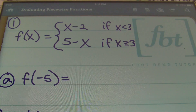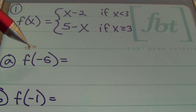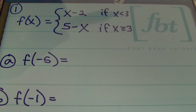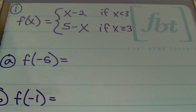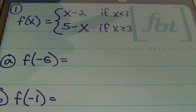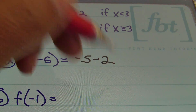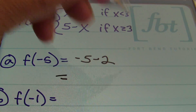When evaluating piecewise functions, you're going to be concerned about the conditions first. For f of negative five, it's asking what is the y value when x is negative five. Negative five is definitely less than three, so we use x minus two. Replacing x with negative five gives negative five minus two, and simplifying that gives negative seven.